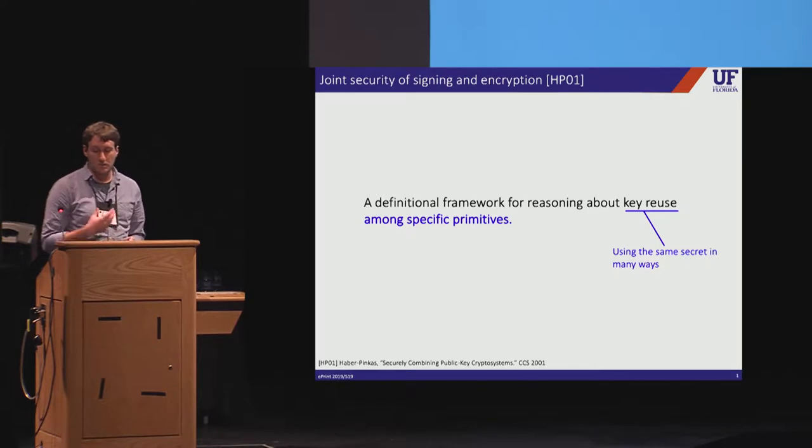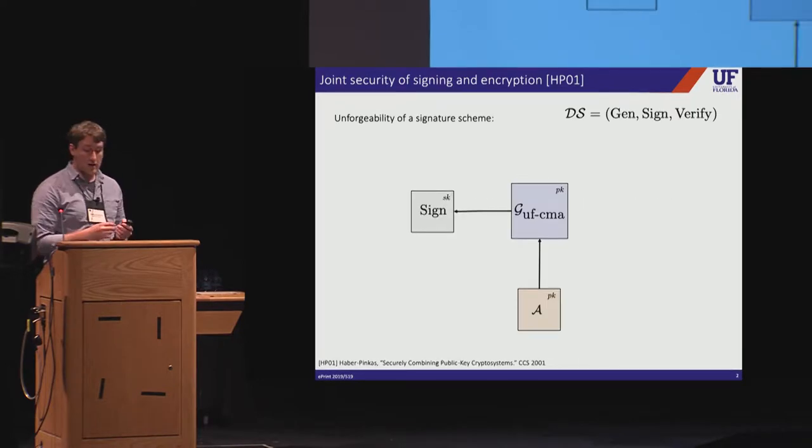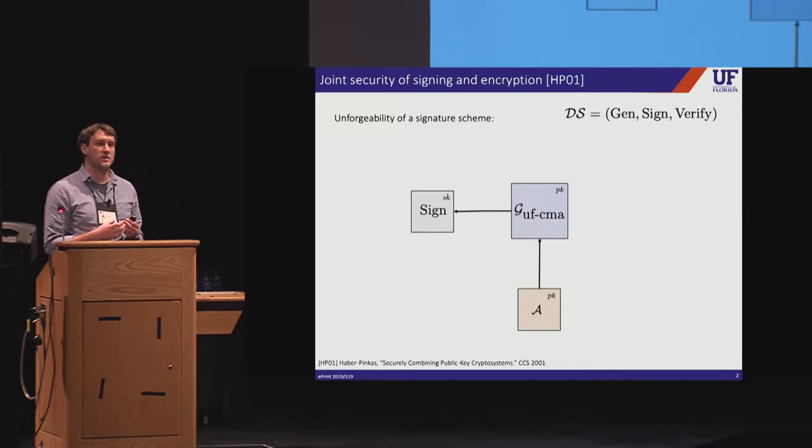Recognizing this fact, prior works have looked at particular settings where key reuse is safe. So one of the most important and influential papers in the space was one from Haber and Pincus, where they introduced the notion of joint security for signing and encryption. So they formalized conditions under which it's safe to use the same key pair for both of these primitives. So they start with the standard notions of security for these and augment them to account for certain forms of key reuse.